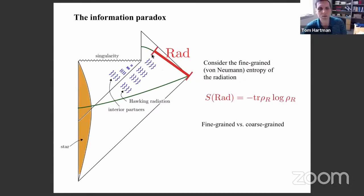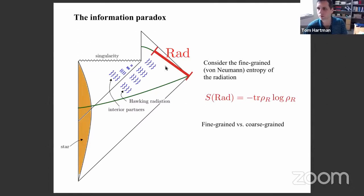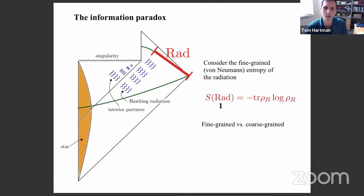The calculation of the entropy is the entropy just of the radiation — the fine-grained von Neumann entropy of this radiation, minus trace of rho log rho. It's important that we're talking about the fine-grained entropy, which would be zero in a pure state. In particular, after we've collected all the radiation and the black hole is completely evaporated, in a unitary system, this fine-grained entropy should be zero, in contrast to the coarse-grained entropy in thermodynamics, which only goes up.